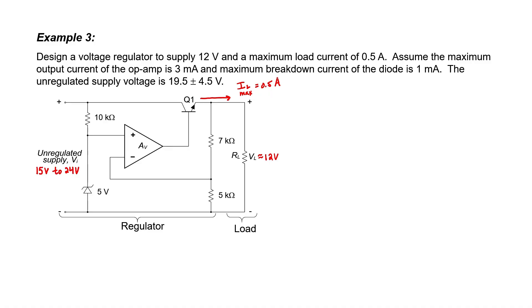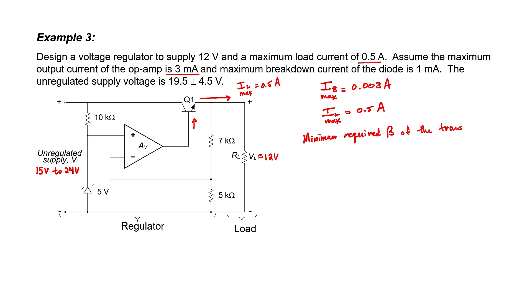Not only are we told what the maximum load current is, we're also told what the maximum output current of the op amp is — it's 3 milliamps. Since that all passes into the base of the transistor, this effectively is the maximum base current that the transistor would ever see. Since the maximum expected load current is half an amp, we can now calculate what the minimum required beta is for the transistor. It works out to be 167, which is a very reasonable number for bipolar transistors.